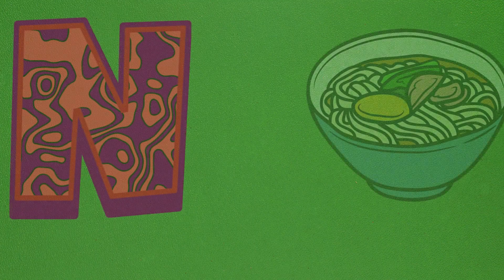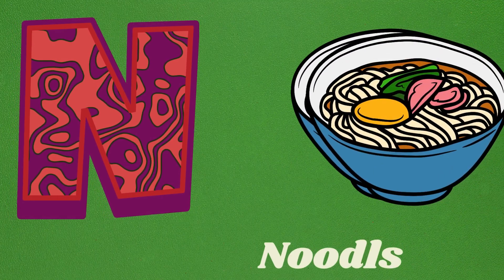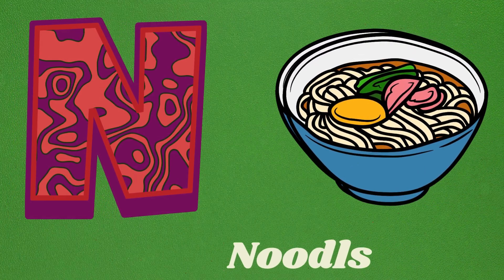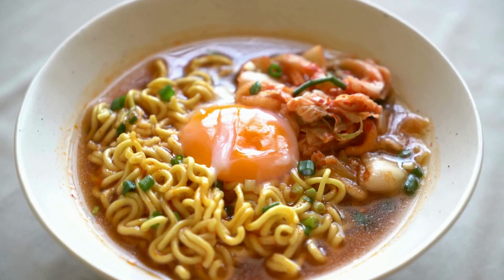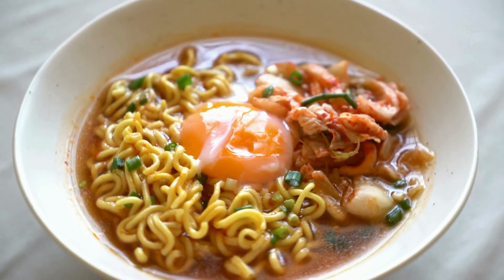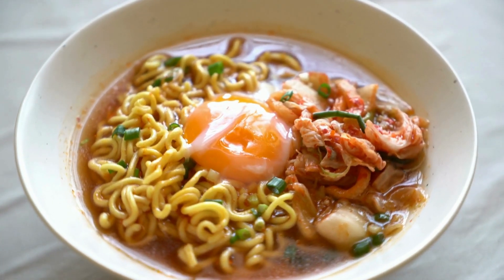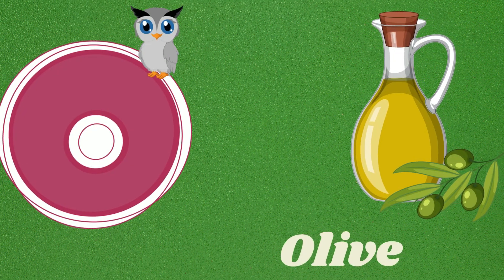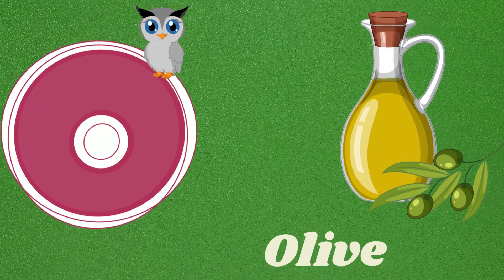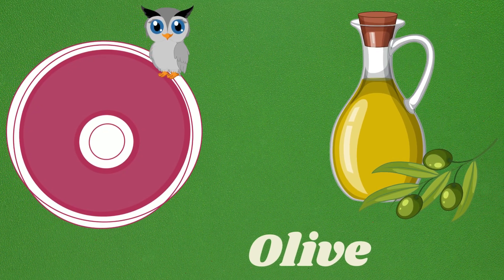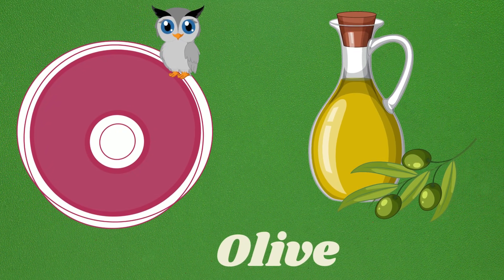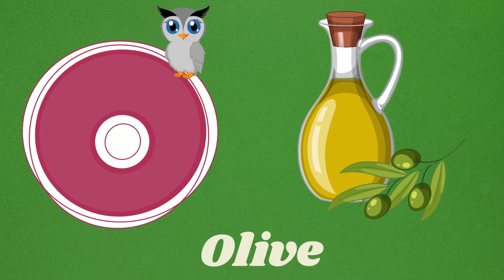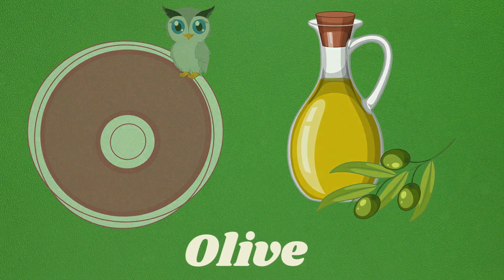N is for noodles. N, N, noodles. N, noodles. N, noodles. O is for olive. O, O, olive. O, olive. O, olive.